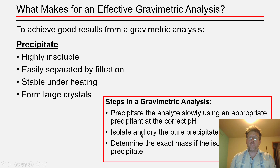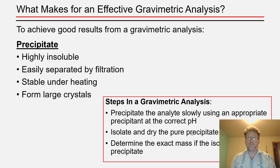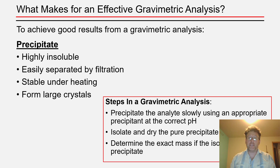Following the growth and termination of the precipitation reaction, you need to isolate and oven-dry the pure precipitate to make sure you collect all available precipitate and that no water or solvent remains on the crystals to throw off their mass. Lastly, you need to determine the exact mass of the isolated precipitate, which often involves an analytical lab technique called weighing to constant mass, which you'll cover when you do your gravimetric analysis in lab.